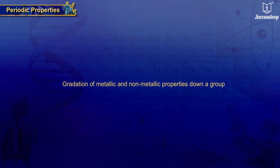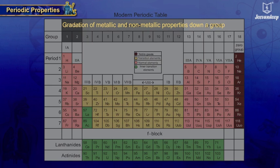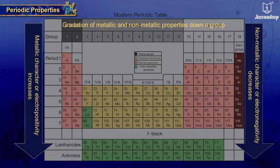Variation of metallic and non-metallic properties down a group. Metallic character increases and non-metallic character decreases from top to bottom in a group.